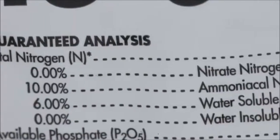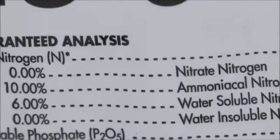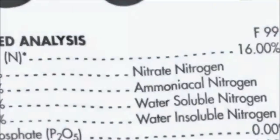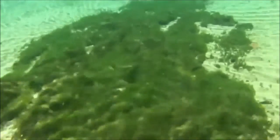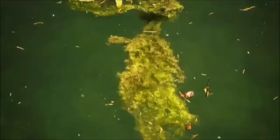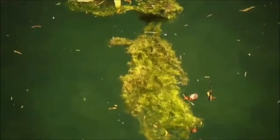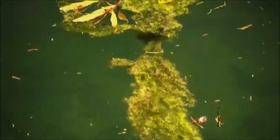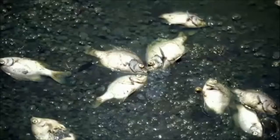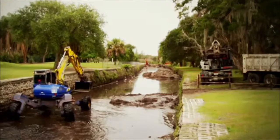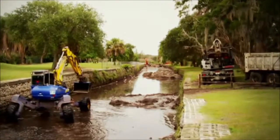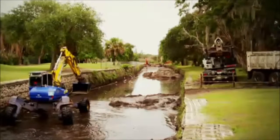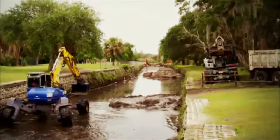Nitrate is a form of nitrogen found in inorganic fertilizers. Once in our water bodies, these nutrients can cause harmful algal blooms that block out light, lower the water's oxygen level, turn the water into a green or rust color, and lead to fish being killed. Local governments spend millions of dollars each year to remove nitrogen from area water bodies.